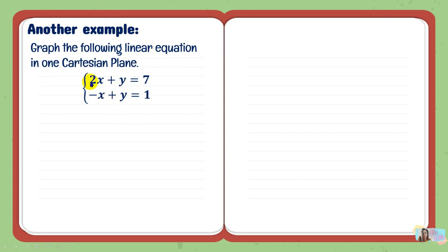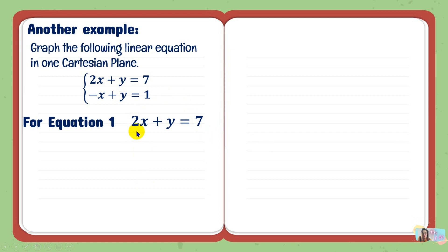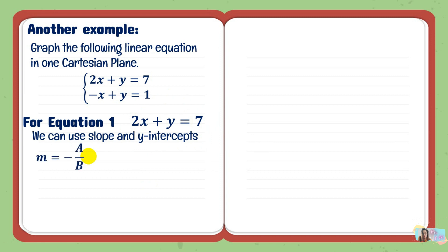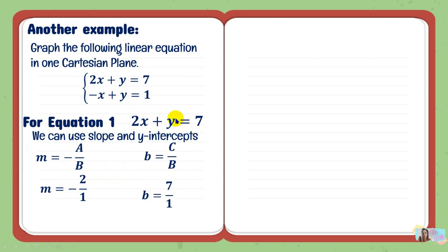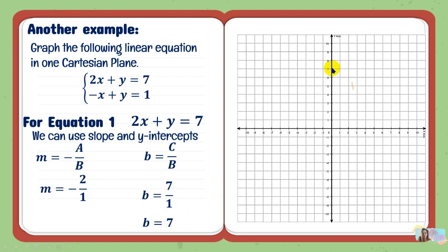Graph the following linear equations in one Cartesian plane: 2x plus y equals 7 and negative x plus y equals 1. For the first equation, the constant 7 divided by 2 would give a decimal, so we use slope and y-intercept with the short method. The slope is negative a over b. A is positive 2, b is positive 1, so the slope is negative 2 over 1. For the y-intercept, c over b is 7 divided by 1, which is 7. We plot positive 7 on the y-axis as our first point.